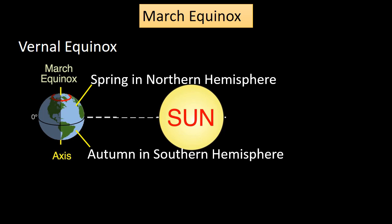During the equinox, the sun is directly above the Earth's equator, causing the sun's rays to shine equally on the Northern and Southern Hemispheres. This results in the length of day and night being roughly equal all over the world.